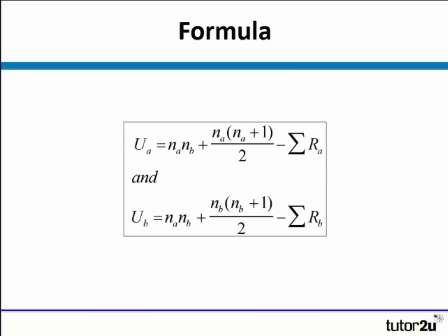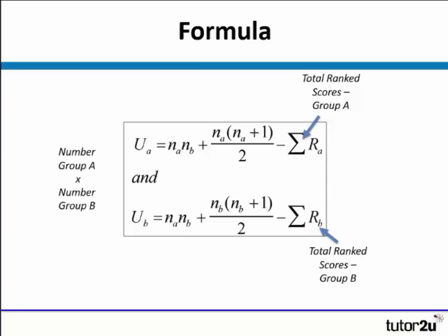The formula for Mann-Whitney U looks quite scary and intimidating. There are lots of parts to it, but if you look closely, you can see it's just repetition of itself. The first thing we notice is that we have to find total ranked scores for group A, and we also have to do the same for group B. We then have to figure out how many people are in group A and how many are in group B, and multiply those two numbers together.